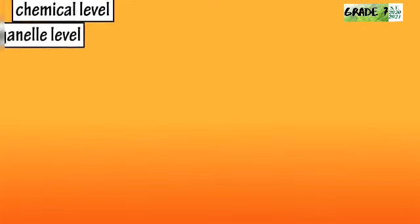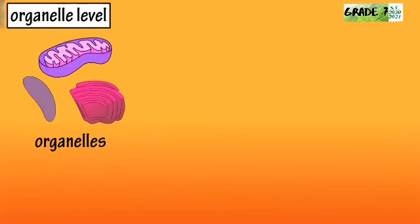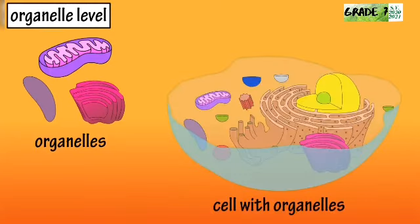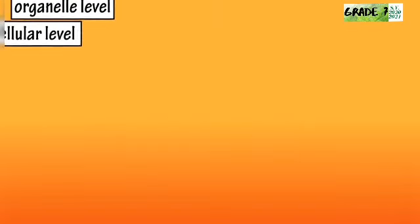The next level of organization in the body is the organelle level. Organelles are made up of chemical groupings and they are tiny organ-like structures in cells. Organelles have specific functions in cells and they cannot live outside of cells. Without organelles, cells cannot survive.